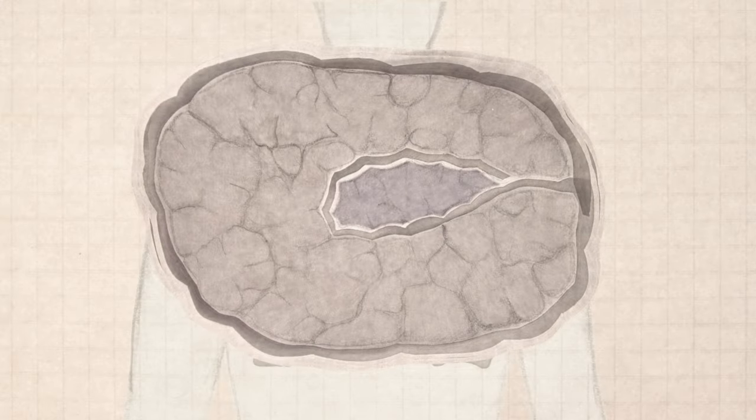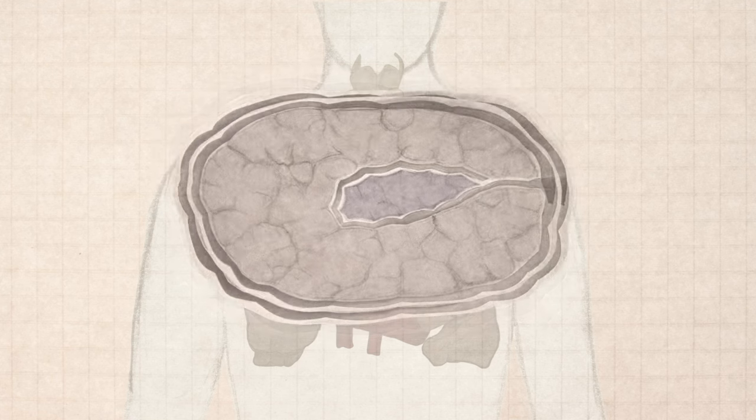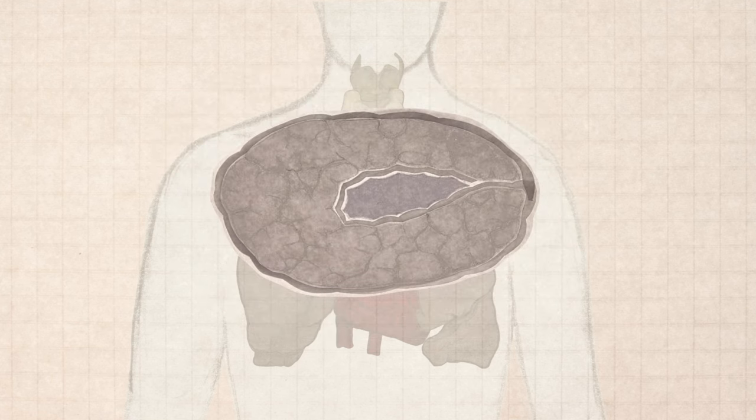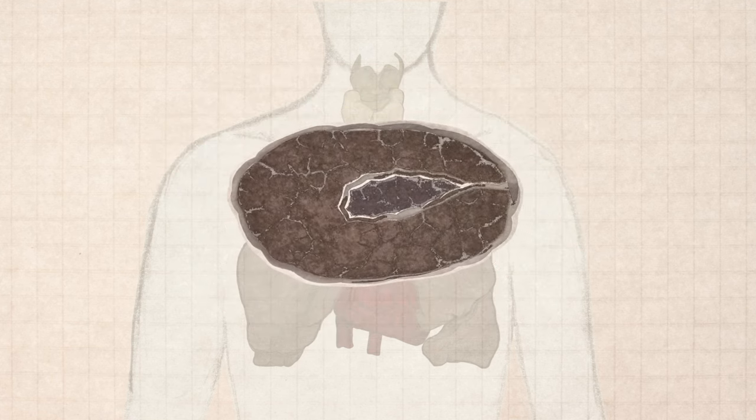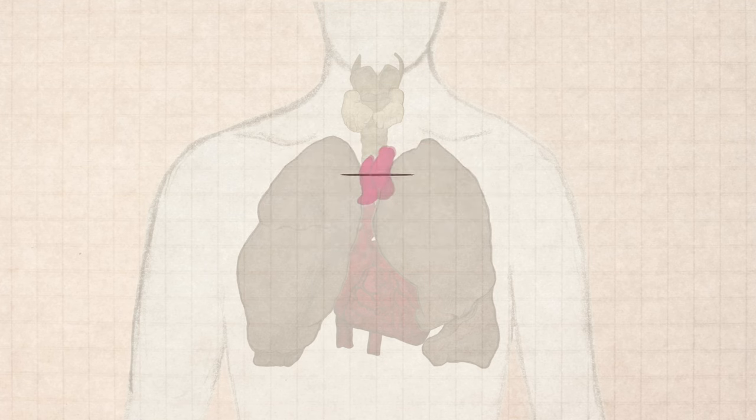From a young age, our thymus degenerates, getting smaller. Throughout our lives, fewer and fewer T cells are made, reducing our protection against new infections and cancer, especially in old age.